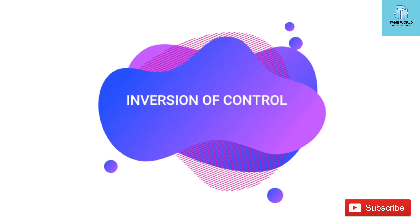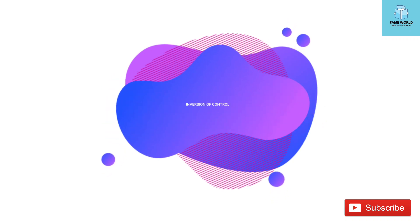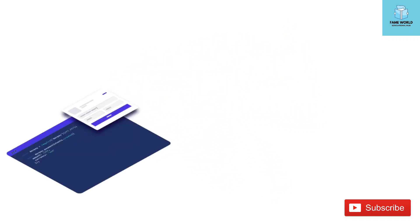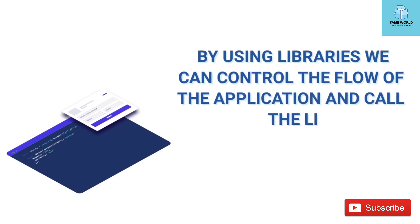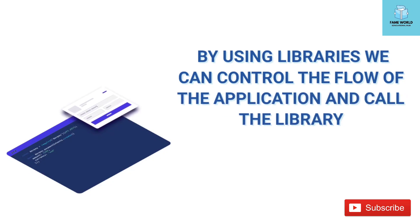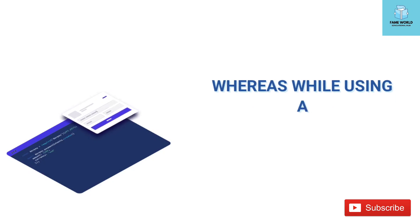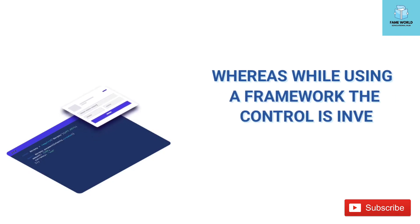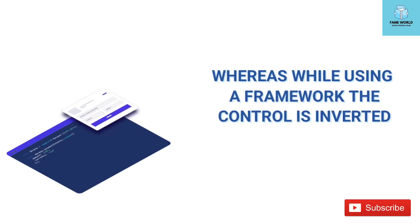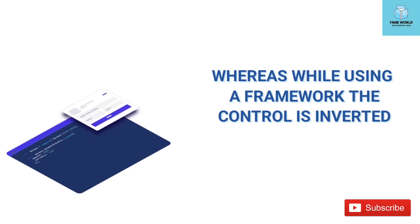Number 2: Inversion of Control. By using a library, you can control the flow of the application and call the library. In contrast, when you use a framework, the control is inverted — the framework controls the flow and calls your code.